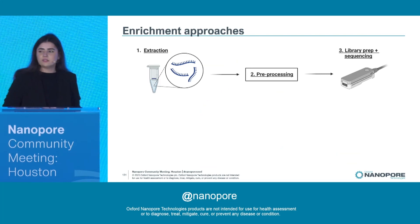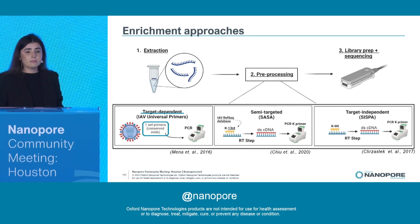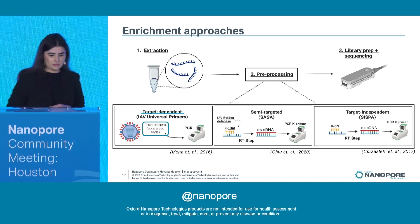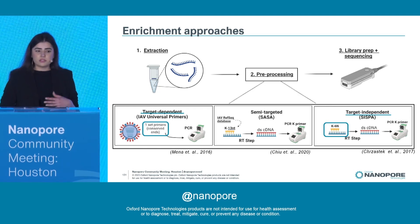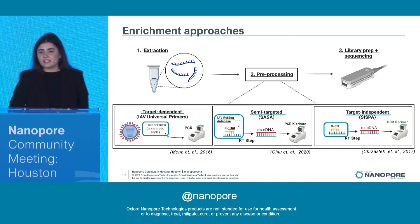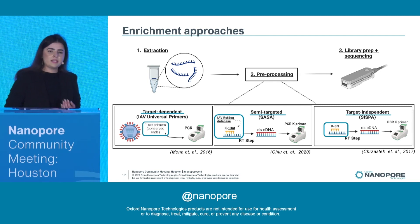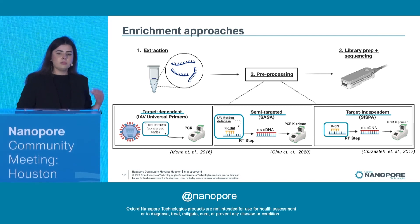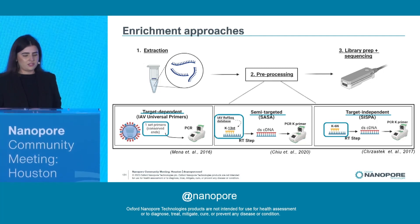Now let's look closely at the different enrichments. Starting from the influenza A universal primers, this is an amplicon-based sequencing. Using one set of primers, you can amplify the whole genome of influenza. With SISPA, we used tagged random hexamers to reverse-transcribe and amplify different RNAs from our clinical sample. And finally, with our SASA, we combined tagged 13-nucleotide-long primers that were designed based on the influenza A RefSeq database from GenBank, because we aim to preferably amplify influenza segments, but we also want to keep the broad spectrum from metagenomic next-generation sequencing.